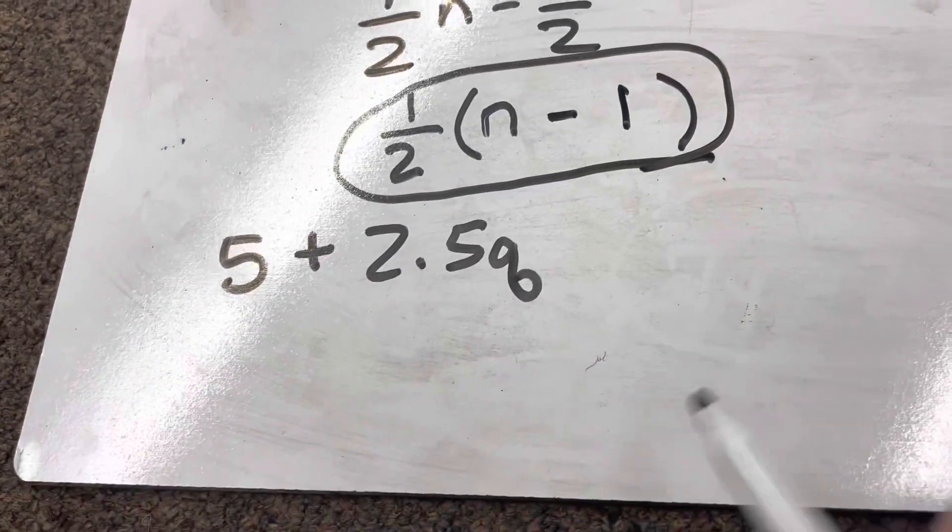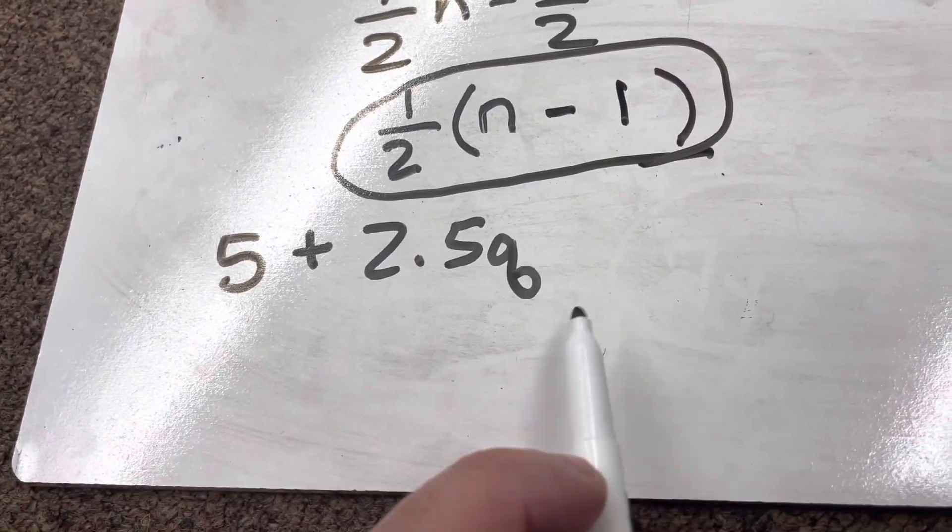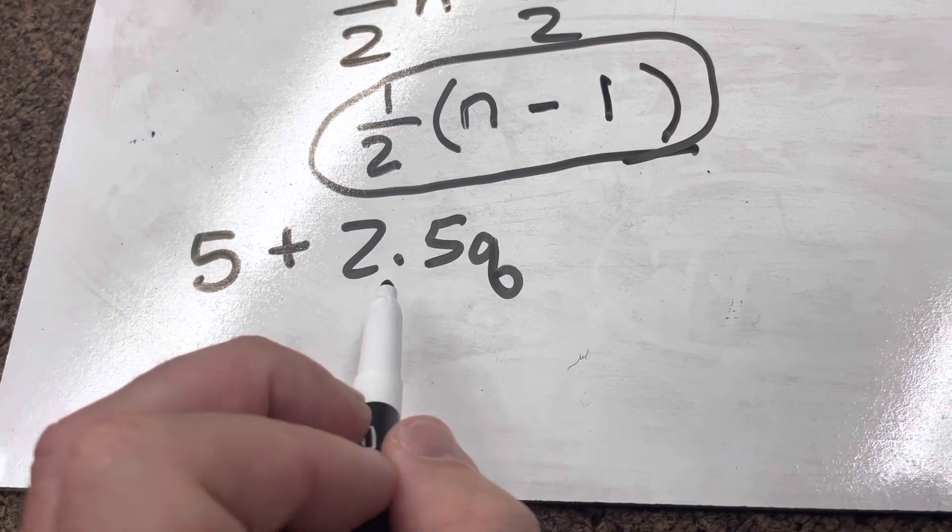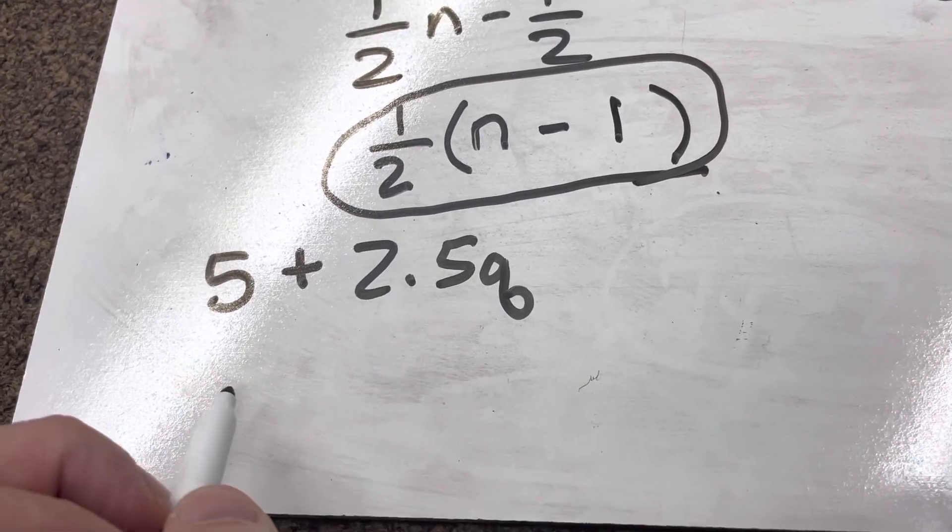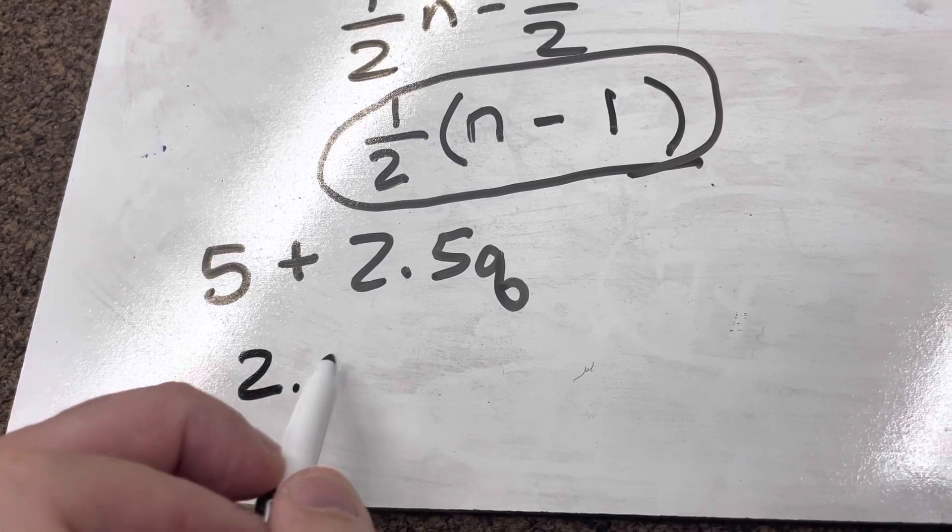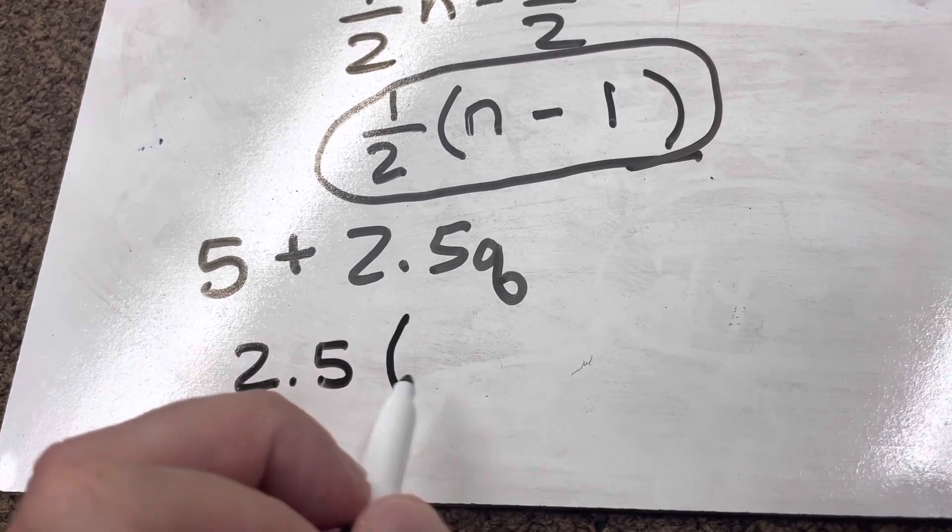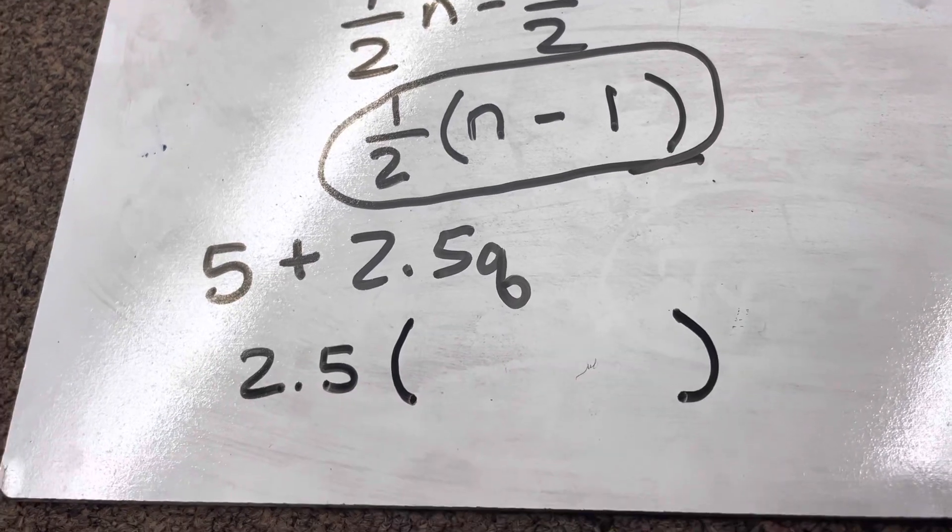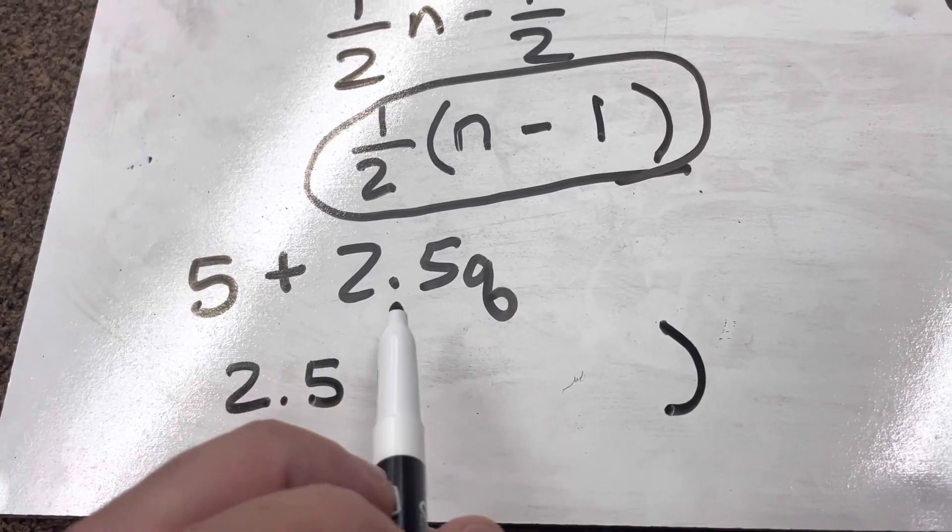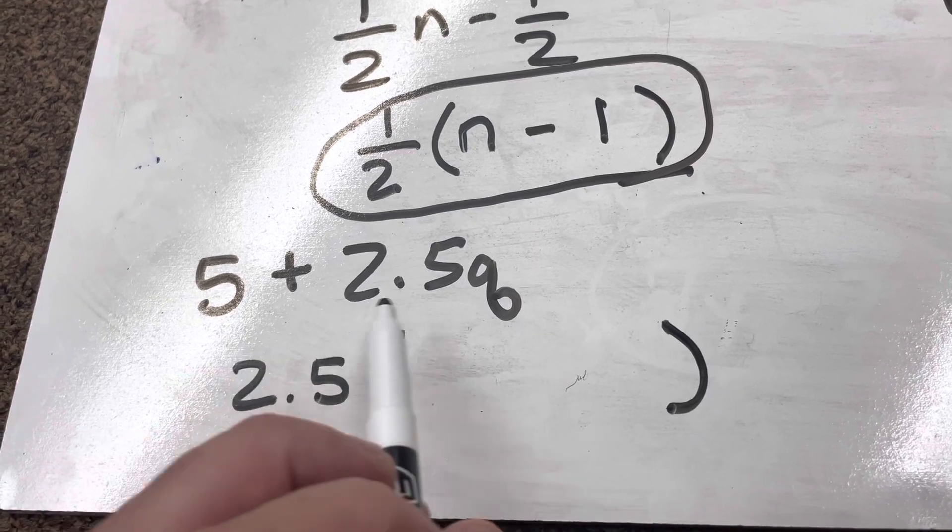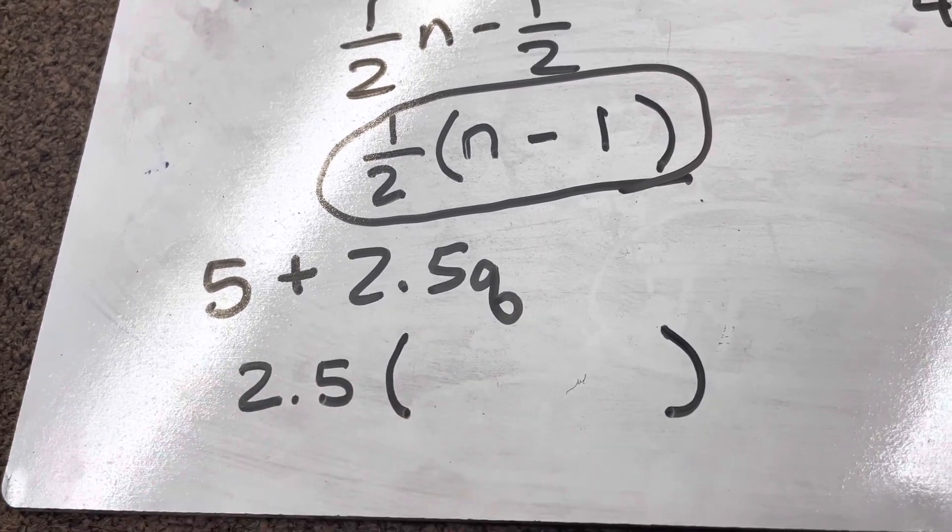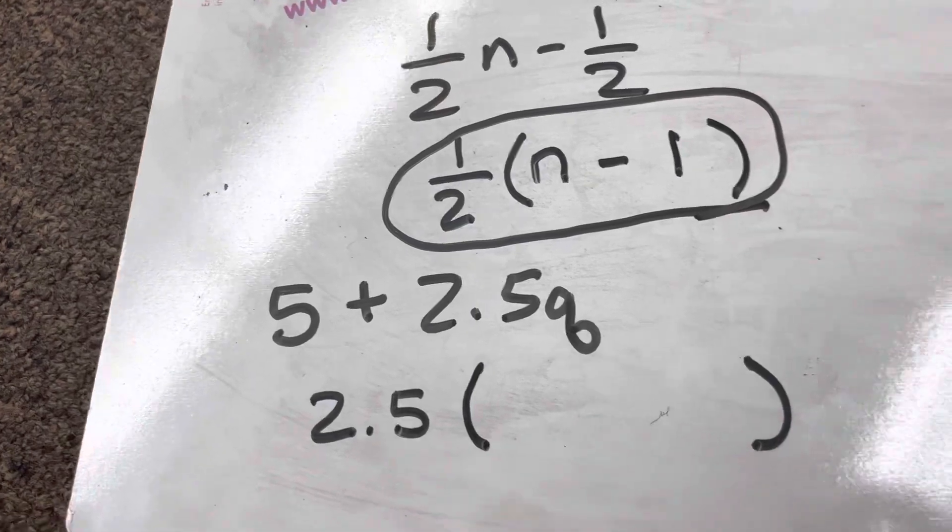All right, so let's go on to this one here. 5 plus 2.5Q. Well, the coefficient is going to be this 2.5 because that's what's connected with the Q. So I'm going to set up 2.5 and then my parentheses. It doesn't really matter because this is an addition problem if I keep it in order or not. But just for simplicity's sake, let's go ahead and keep it in order.